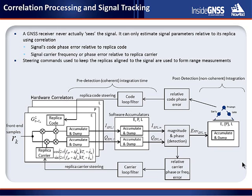By integrating the steering commands, two types of range measurements are formed based on code and carrier. The correlation-based tracking process is analogous to driving a car with eyes closed, only allowed to open them periodically — requiring higher update rates and more bandwidth for winding roads or high speeds. In GPS tracking, the receiver must keep up with three dynamics: actual line-of-sight dynamics, satellite clock dynamics, and receiver clock dynamics. This is why high-accuracy receivers need a good quality, low-noise oscillator.